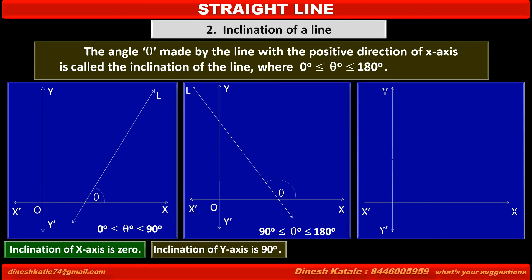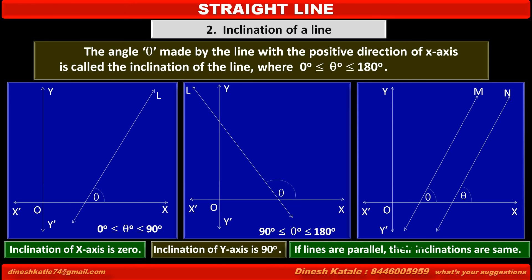Consider a coordinate system in which two lines, line M and line N, are parallel to each other. So their angle of inclinations are same, each one is θ. Thus if the lines are parallel, their inclinations are same.